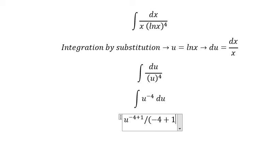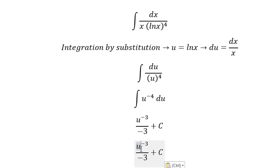And we put C which is the constant. This one you got u to the negative three over negative three, where u is ln x. This is the end, thank you for watching.